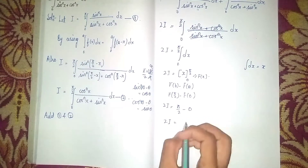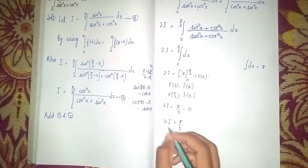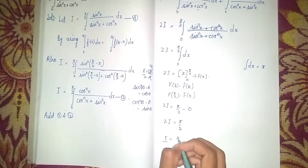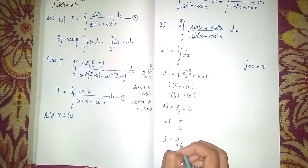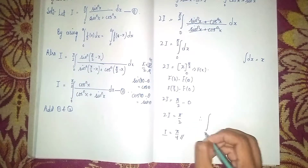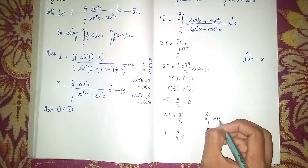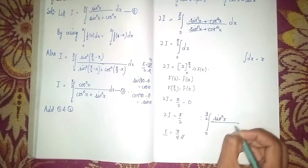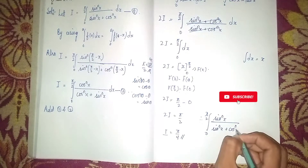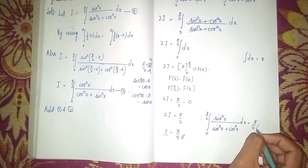So 2I = π/2, which means I = π/4. Therefore, ∫₀^(π/2) sin^n(x) / (sin^n(x) + cos^n(x)) dx = π/4. This is our answer. Thanks for watching.